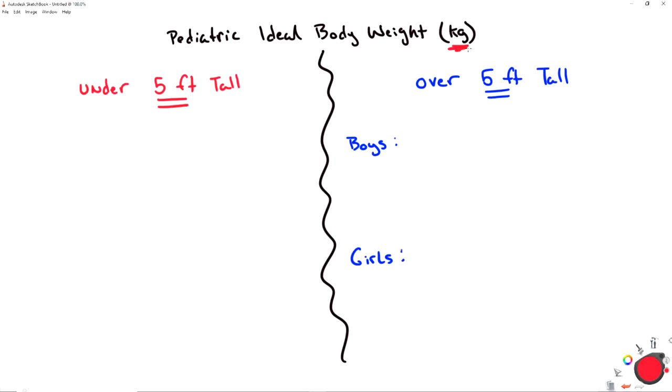So the biggest thing that you need to remember with pediatrics is it goes by height. Height under five feet tall and height over five feet tall according to this TROB method. So we're going to start with the under five feet formula and because they're under five feet, this TROB method does not differentiate a formula for boys and for girls, it just has one formula.